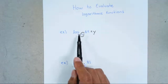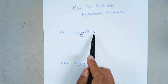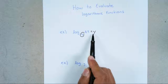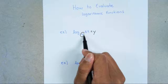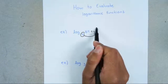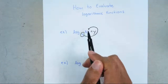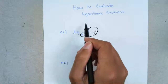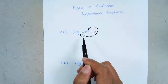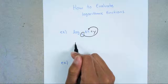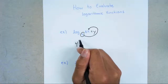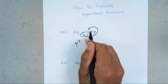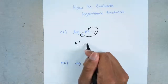What you're going to do anytime they ask you to evaluate something like this is you're going to set it equal to y — it doesn't really matter which letter, as long as you equal it to something. I circled the 4 and the y because you're going to go around — I consider this kind of going around the world. We start at 4, our base, then cross the y, then equals to 64. So: 4 to the y equals 64.